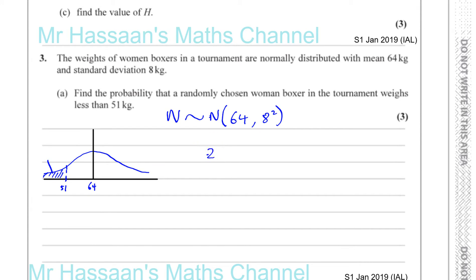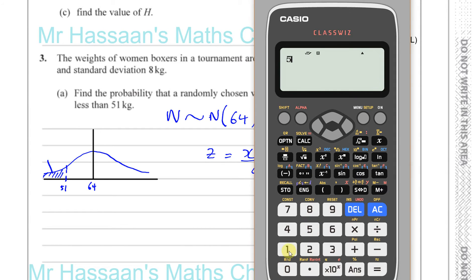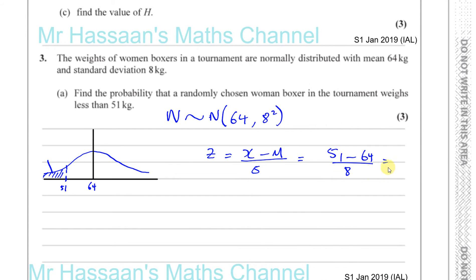The standardized z-value is equal to the observed value minus the mean, divided by the standard deviation sigma. So z equals 51 minus 64, divided by 8. That gives us minus 13 over 8, which equals minus 1.625. So our z-value is minus 1.625.